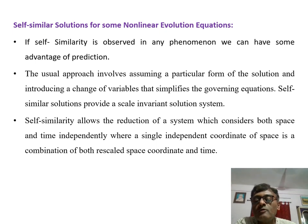If there is some self-similarity, we can take the small sample of the data, identify the results, collect the patterns, and then we can expect that the same form of patterns or particular characters can be again observed in the future. The usual approach involves assuming a particular form of the solution and introducing a change of variables that simplifies the governing equations. Self-similar solutions provide a scale invariant solution system. Self-similarity allows the reduction of a system which considers both space and time independently to a single independent coordinate that is a combination of both rescaled space coordinate and time.